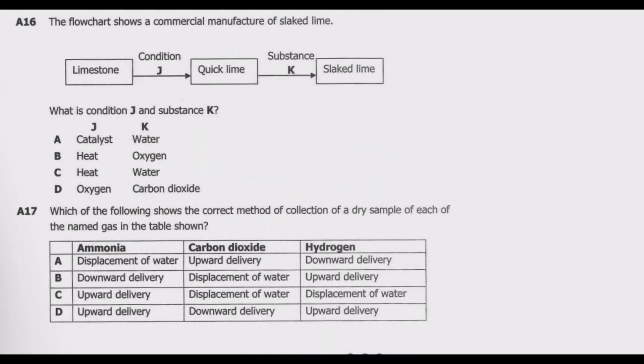Question A16: The flowchart shows a commercial manufacture of slaked lime. What is condition J and substance K? The question wants us to deduce what J is and K from this flowchart. So limestone is nothing but calcium carbonate, which when heated through thermal decomposition, we get calcium oxide in the kiln.